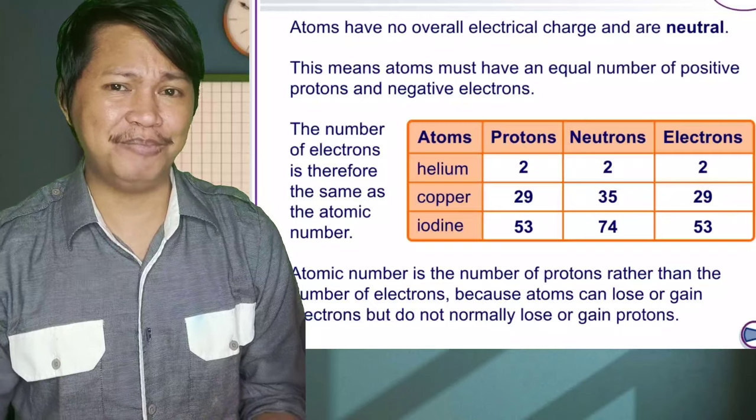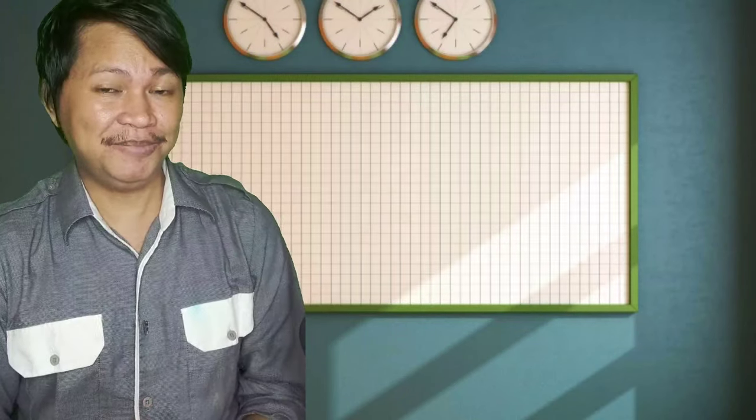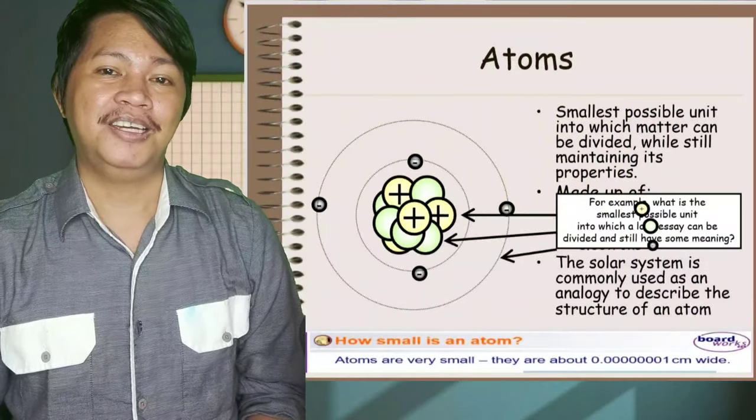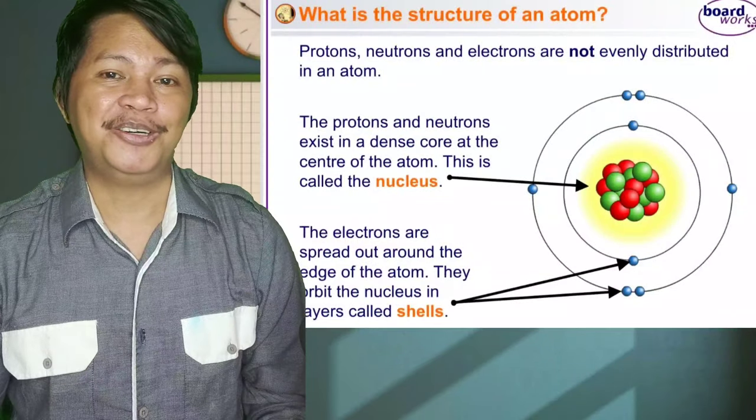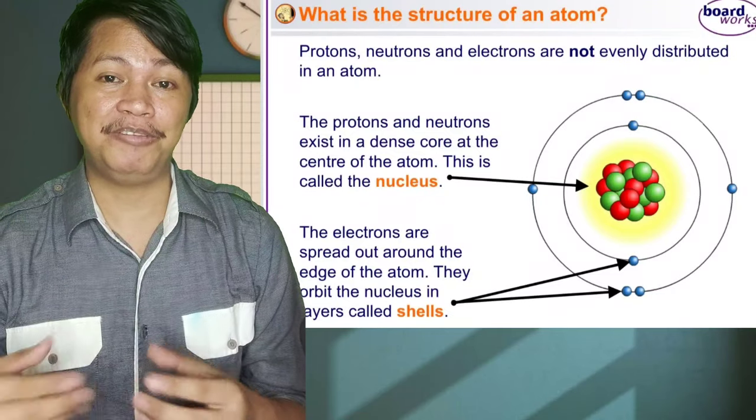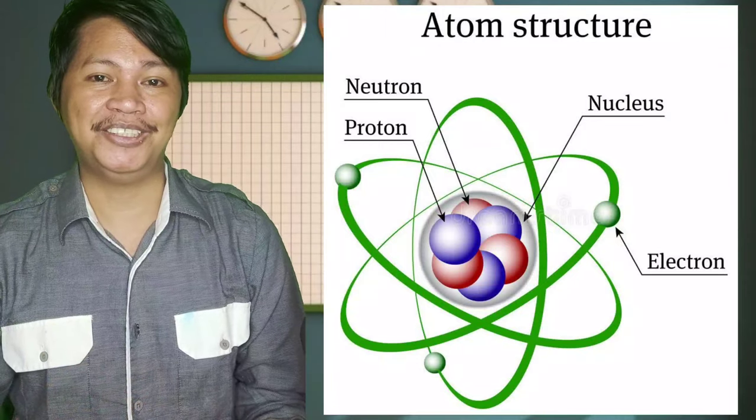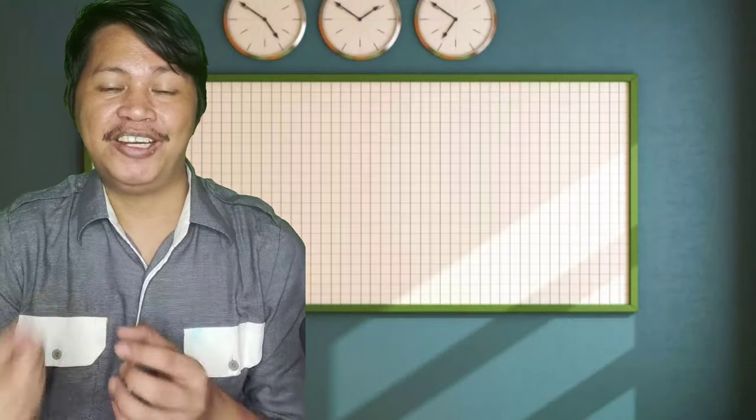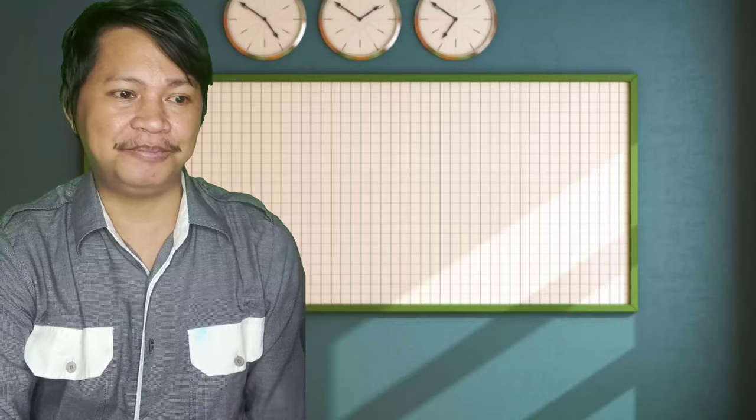So let's review now the atomic structure. An atom has each subatomic particle. First we have the proton and neutron that is found or situated in the nucleus. We also have the electrons that can be found outside the nucleus. So we have proton, neutron, electron, and of course the center is the nucleus. I hope class that you already know the structure of an atom.